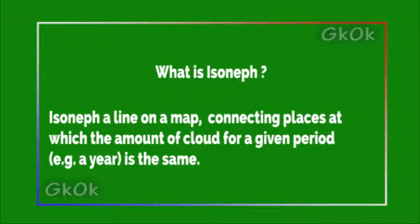What is an isonyph? An isonyph is a line on a map connecting places at which the amount of cloud cover for a given period is the same.